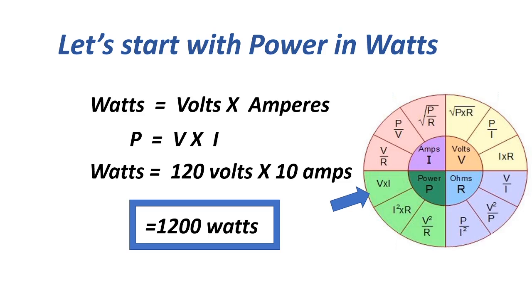Watts equals volts times amperes, or P equals V times I. Equals 120 volts times 10 amperes, equals 1200 watts.